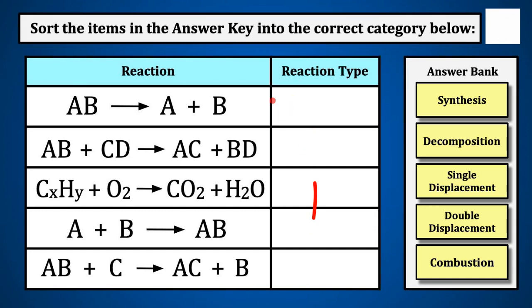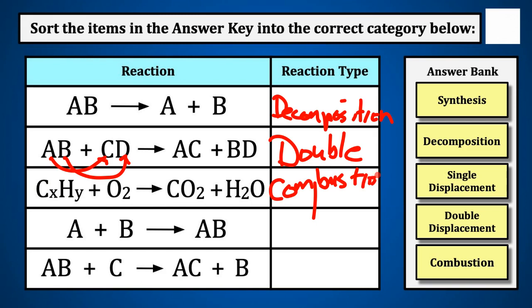So let's take a look at this. A plus B. So one compound breaks into two. That's a decomposition. A and B and C and D. Two compounds and they switch partners. A goes with C, B goes with D. That's a double. And we have this oxygen, carbon dioxide and water. You have a carbon. So this is a combustion. To make one, that's the synthesis. And we have a compound and a single element. That's a single replacement. So let's just stop right there.